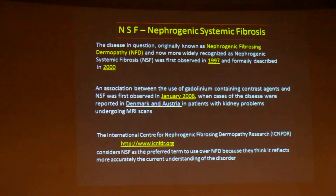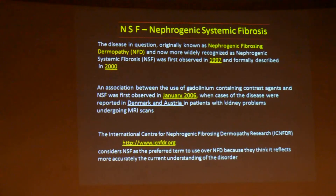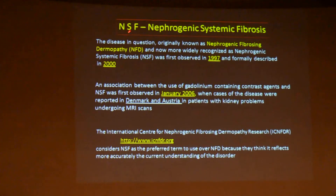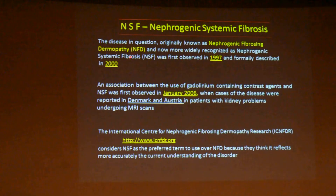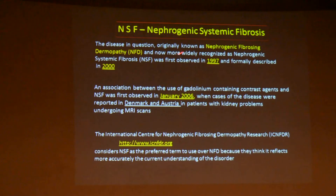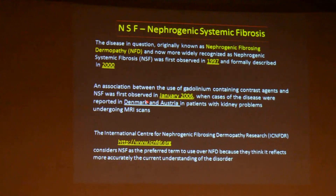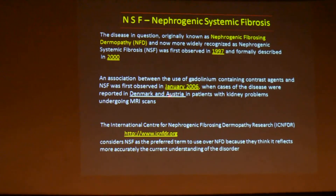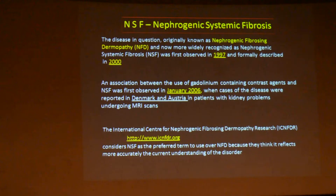Unlike CIN, with MR contrast media we have NSF — nephrogenic systemic fibrosis. When patients with renal impairment undergo MR contrast studies, there is a possibility they can develop NSF. This was previously known as nephrogenic fibrosis dermopathy (NFD), recognized in 1997 and described in 2000. Today, NSF is the preferred terminology. NSF is an acquired iatrogenic disorder that manifests only in patients with chronic kidney disease when GFR is less than 60 ml per minute. Diagnosis is confirmed by deep skin biopsy.